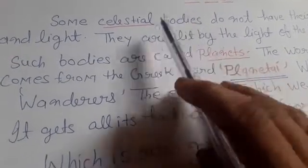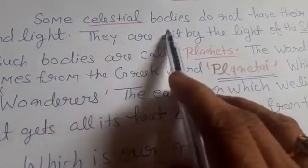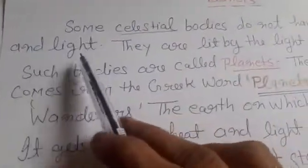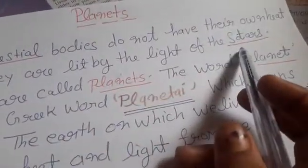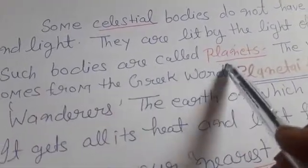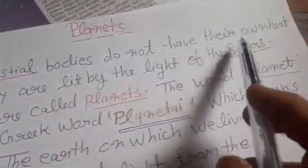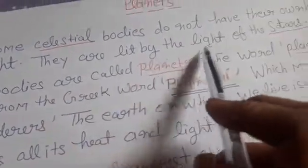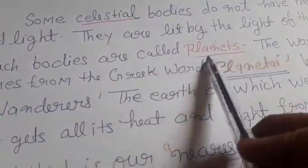So let's start. Some celestial bodies do not have their own heat and light. They are lit by the light of the stars. Such bodies are called planets.